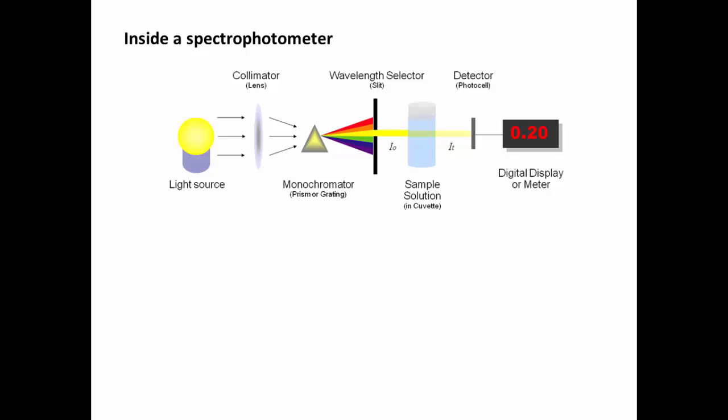If we look inside a spectrophotometer, these are the basic parts. There's a light source, a lens, and then there's a prism to separate the white light into different wavelengths. The light then passes through a wavelength selector, which is basically a tiny little opening. And it's made small enough so that only one color or wavelength of light is able to pass through.